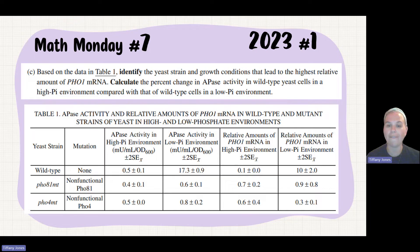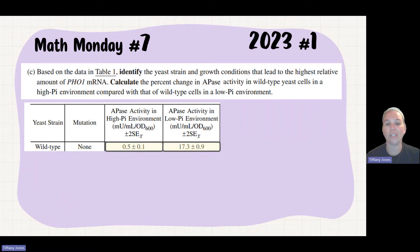Well, I'm looking for wild type in high phosphate and low phosphate and specifically looking at APase activity. So I'll highlight those. Now, let's isolate those values alone and let's look at this.